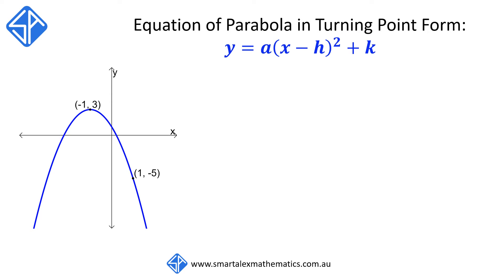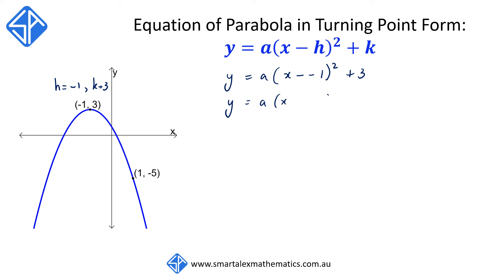Here's another example of how to find the equation of a parabola using turning point form. In this parabola, we have the turning point or vertex at (-1, 3). So we can deduce that h = -1 and k = 3. Substituting these values into the equation gives us y = a(x - (-1))² + 3, which simplifies to y = a(x + 1)² + 3.